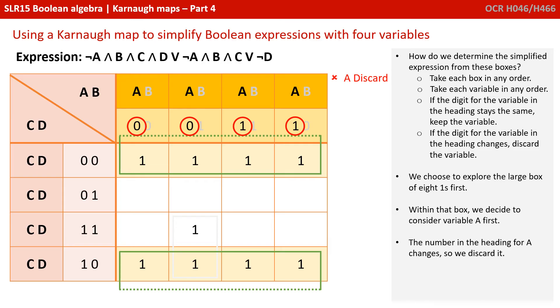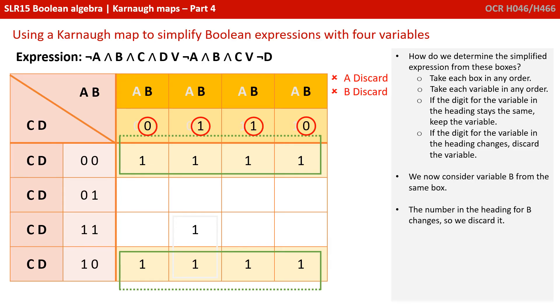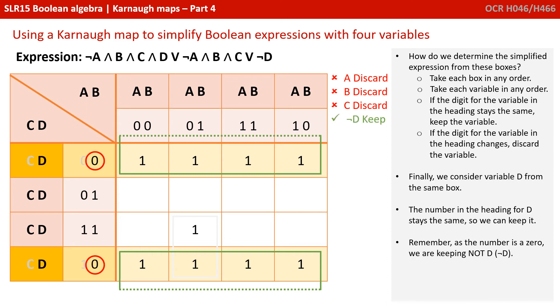Where in that box, we decide to consider variable A first. And the number in the heading for A is changing between 0 and 1, so we discard it. We now consider variable B from the same box. The number in the heading for B changes, so we discard it. We now consider variable C from the same box. And the number in the heading for C is changing, so we discard it.